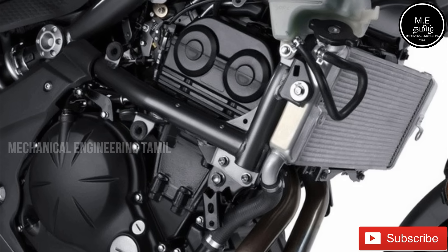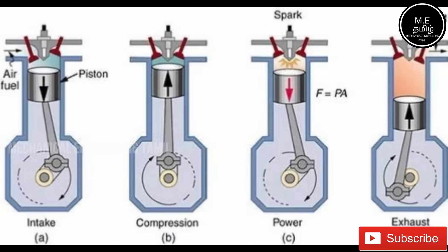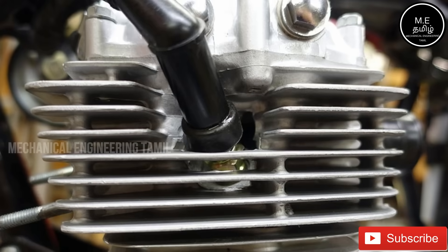In the cooling system, the engine is running, and without cooling, the crankshaft and the piston can be damaged. That is why there is a cooling system. The types are: air-cooled, oil-cooled, and liquid-cooled. First, we will look at the air-cooled engine.